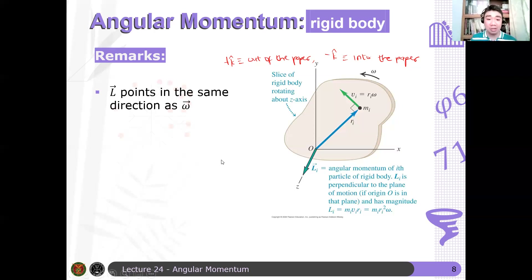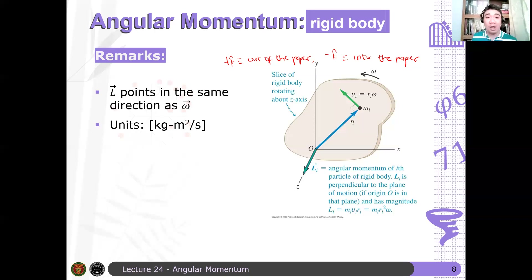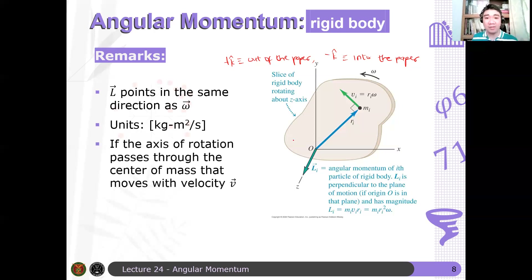The units of angular momentum are kilogram meter squared per second. Now, let's say a rigid body is both rotating and translating — its center of mass is translating at the same time as it rotates. Then the total angular momentum of that rigid body is the sum of the angular momentum due to translation and the angular momentum due to rotation. Hence, if the velocity of the center of mass is given by v, then the total angular momentum is r cross p plus Iω, where p equals the mass of the particle times the velocity of the center of mass, and I is taken at the center of mass. So: L_total = r cross p + Iω.